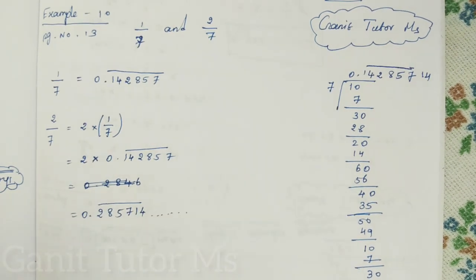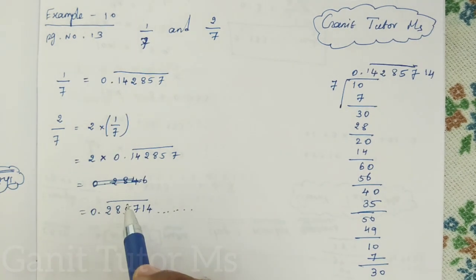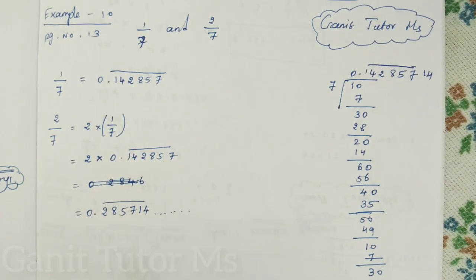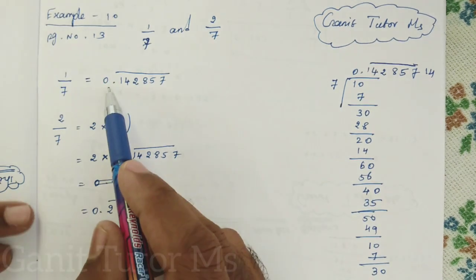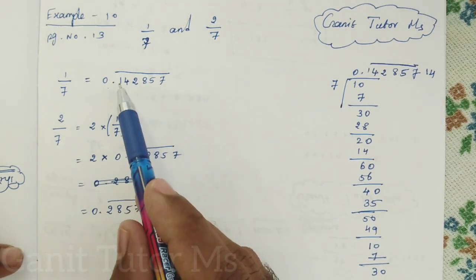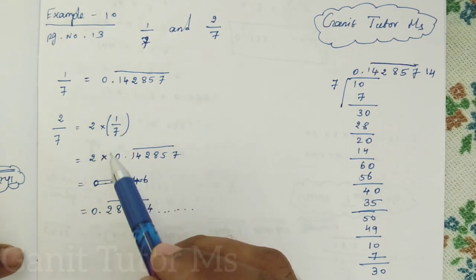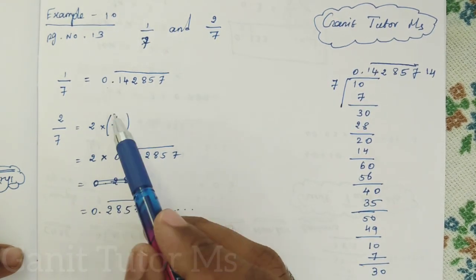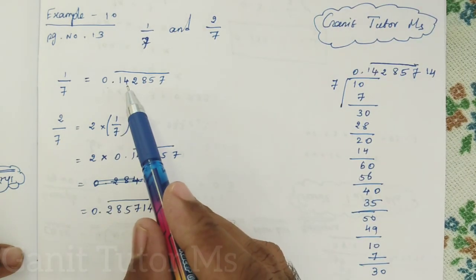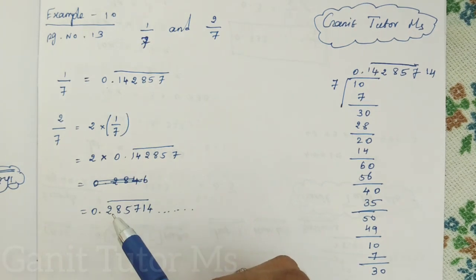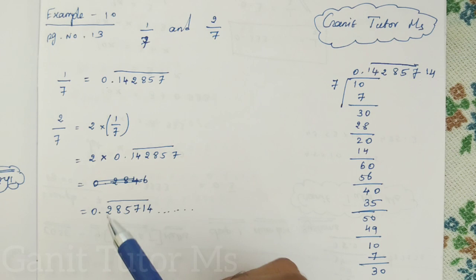Now we know that 1 by 7 decimal expansion, 2 by 7 decimal expansion. So in between these two we should find out the one irrational number. You can check it now. First number here 0 0. Second number here 1 and here 2. So we couldn't find out the next number. In between the number, what is the number should be there in between 1 and 2? It is no number right? Next, 4 8. So in between 4 and 8 we know that number 5 6 7. So we get a 5.